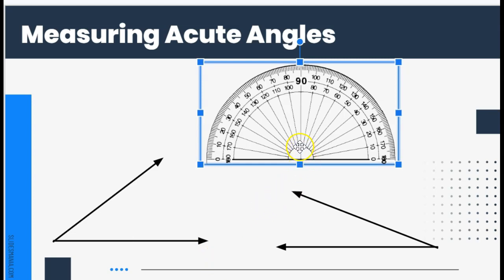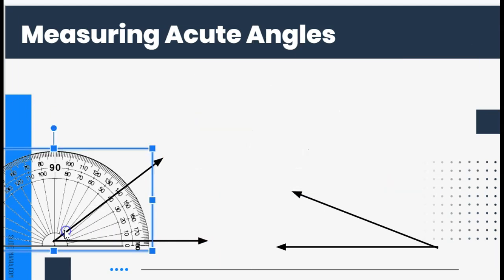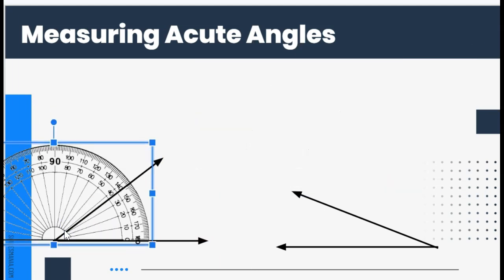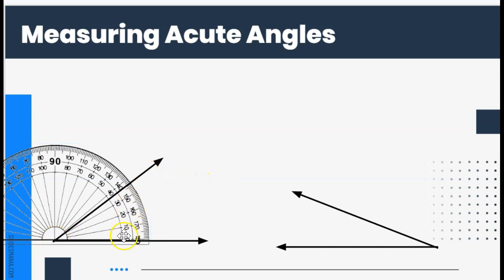Let's look at how to measure acute angles. When measuring any angle, I need to focus on where the two lines meet — that is where I want my vertex to be so I know I'm measuring accurately. I'll place the protractor on top of my angle and align the vertex. Because I know it's less than 90 degrees and my angle is facing in this direction, I'll use the smaller numbers on the inside.